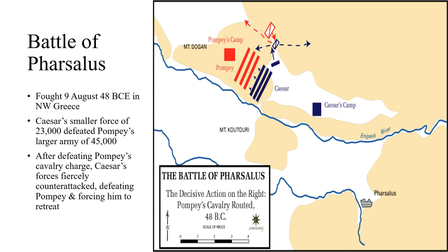This is a battle map showing the Battle of Pharsalus, fought on the 9th of August, 48 BCE, in northwest Greece. Caesar's much smaller force of about 23,000 defeated Pompey's army of about 45,000. Pompey made a cavalry charge on Caesar's infantry, but Caesar's troops — more experienced in combat — withstood the charge and then led a fierce counterattack, breaking Pompey's army and forcing him to retreat. This was the decisive battle: Pompey fled, and was eventually killed by Ptolemy XIII.